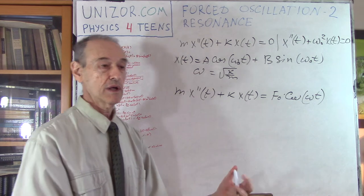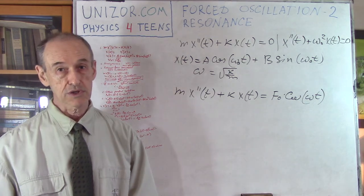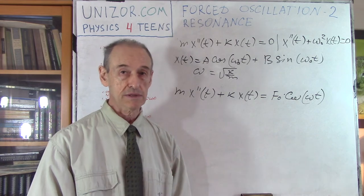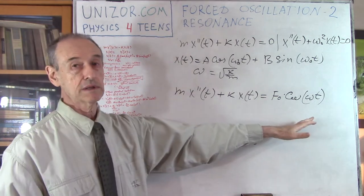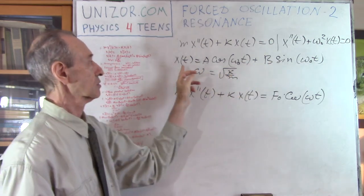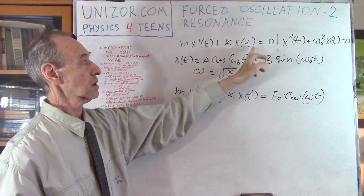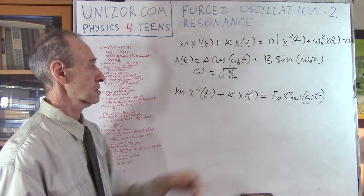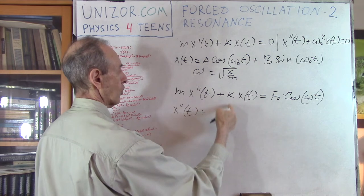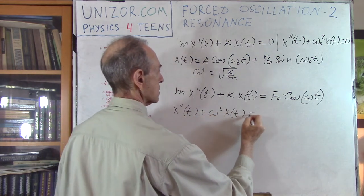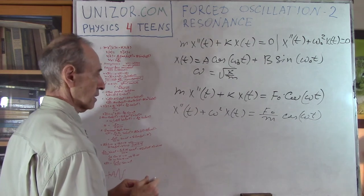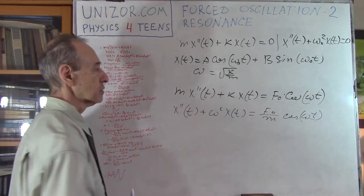Whenever the spring goes into a squeezing mode, you are squeezing even further. Whenever it's trying to stretch, you are stretching even further. What happens in this case is so-called resonance, and we will talk about this mathematically. All we have to do is find a partial solution to this differential equation, then add the general solution to the corresponding homogeneous equation. We rewrite it as x'' + (k/m)·x(t) = (F/m)·cos(ωt), where k/m = ω².